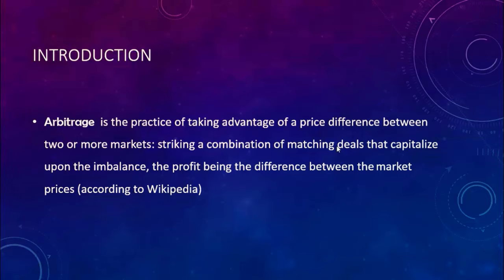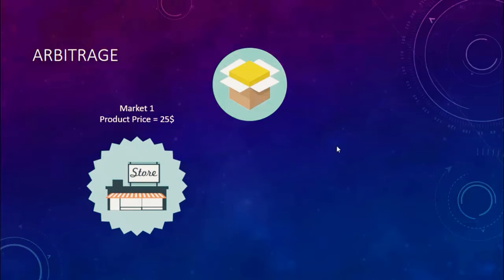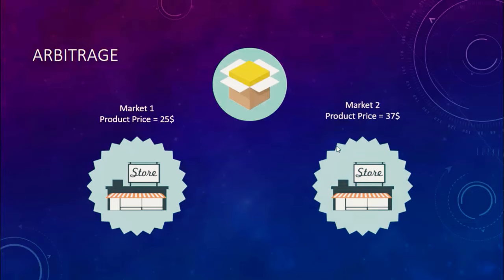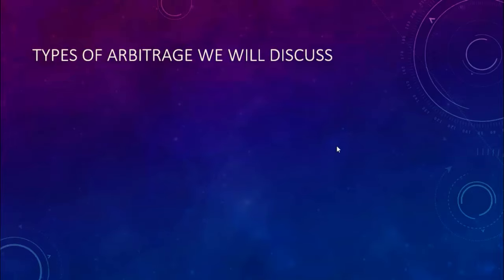It's actually very simple. Let me explain how it works. We have a product — let's say an iPhone or a Samsung phone. It's sold in market one at $25 and in market two at $37. Arbitrage is practically buying from market one and selling in market two. We profit from the different price points — $37 minus $25 equals $12 profit. It's the classic formula: buy for less, sell for more.